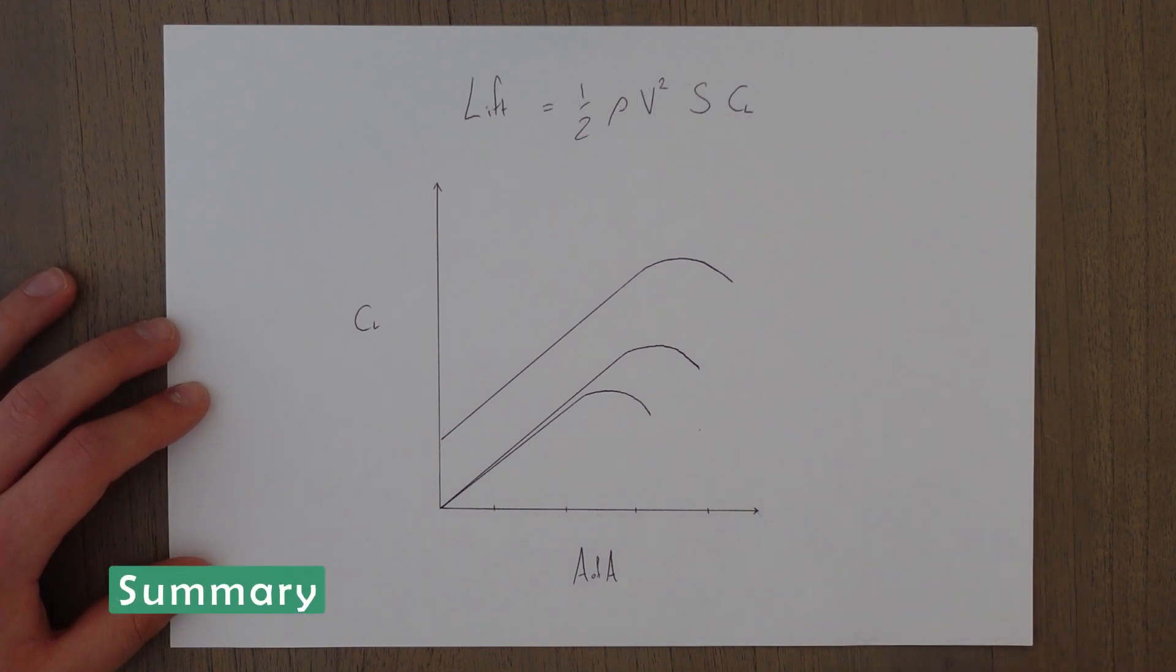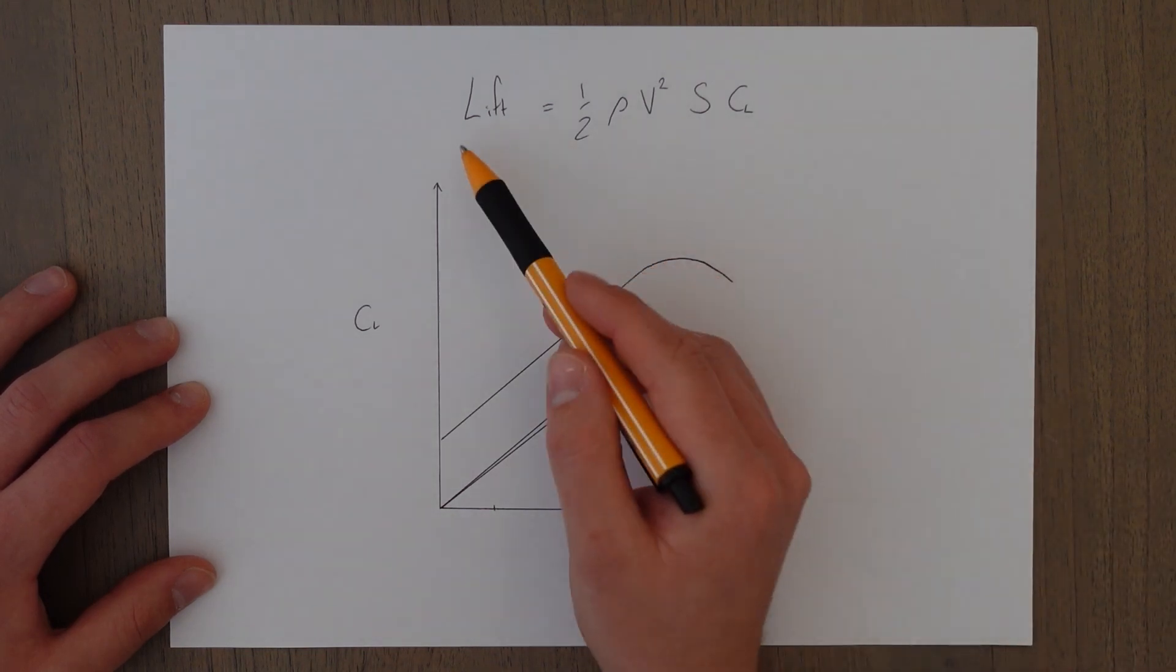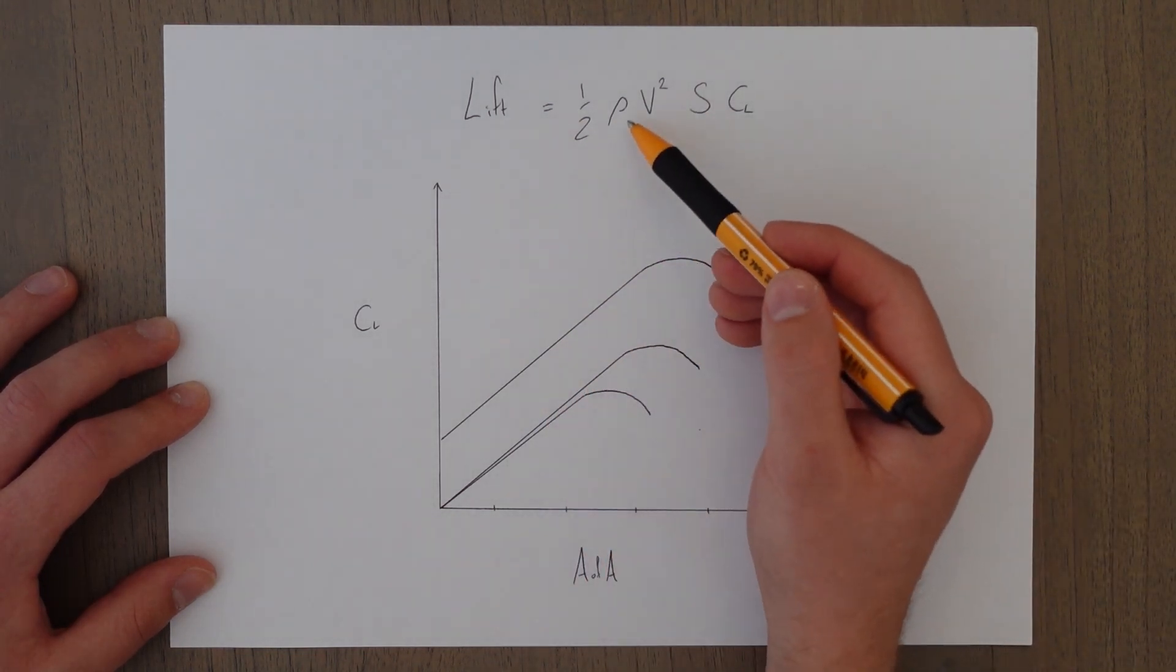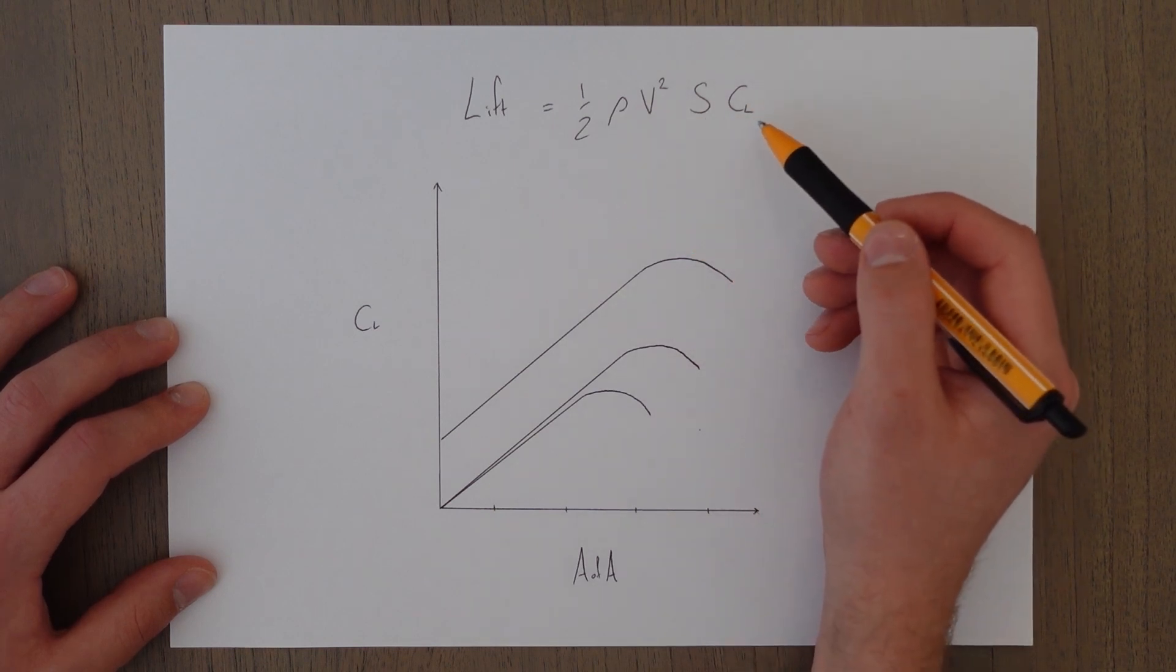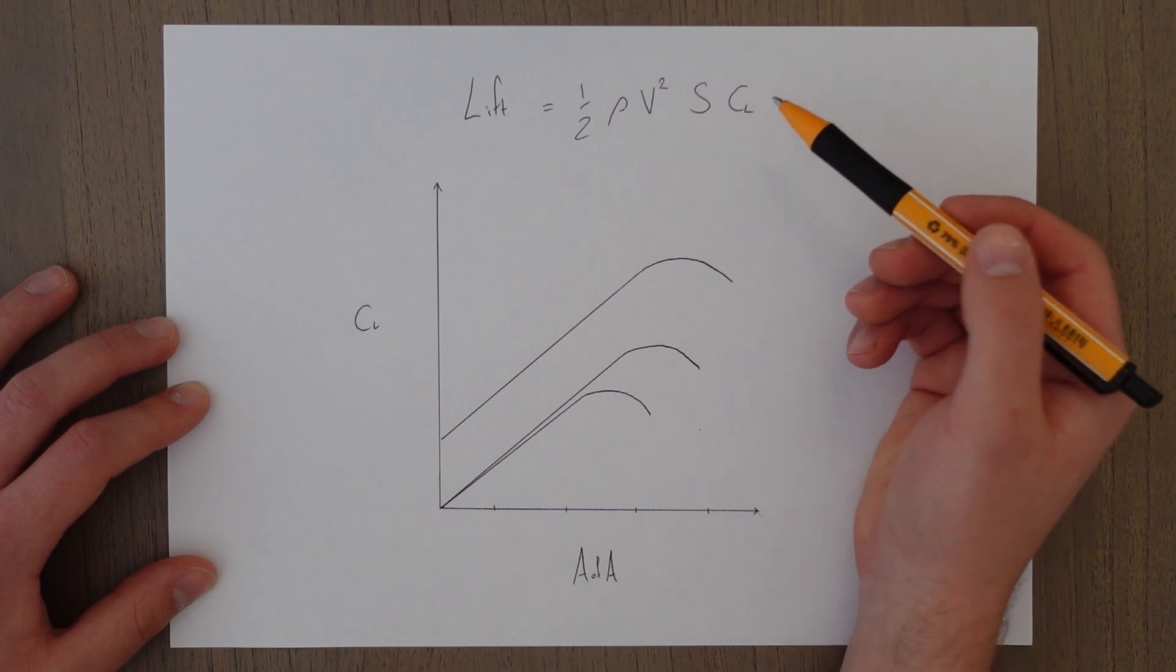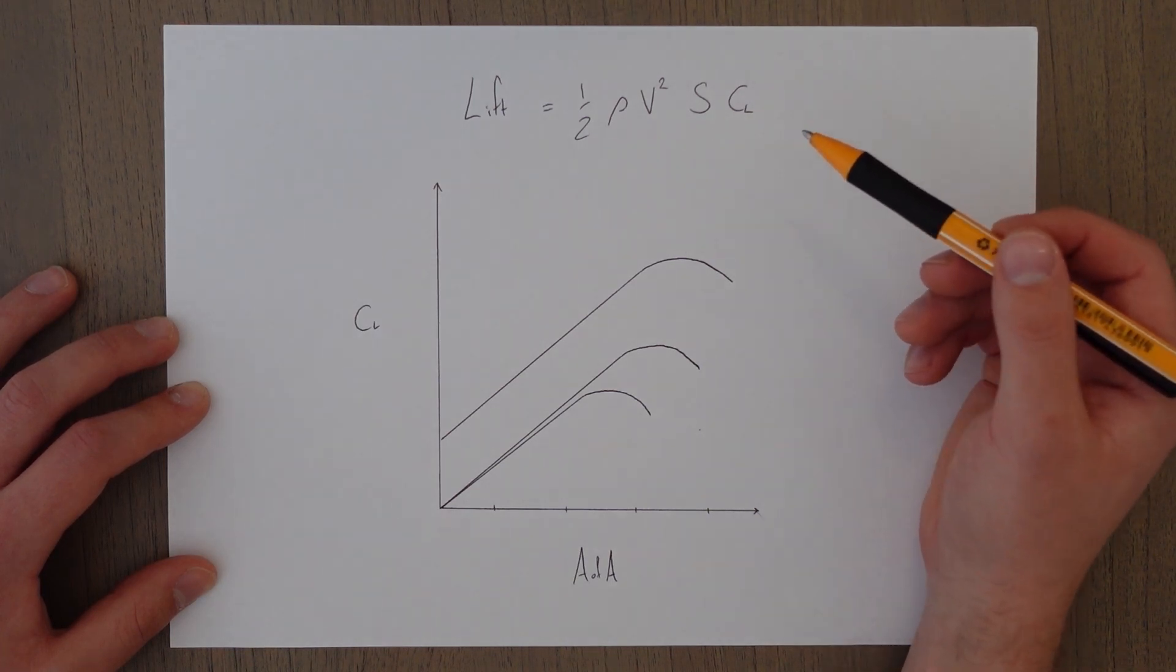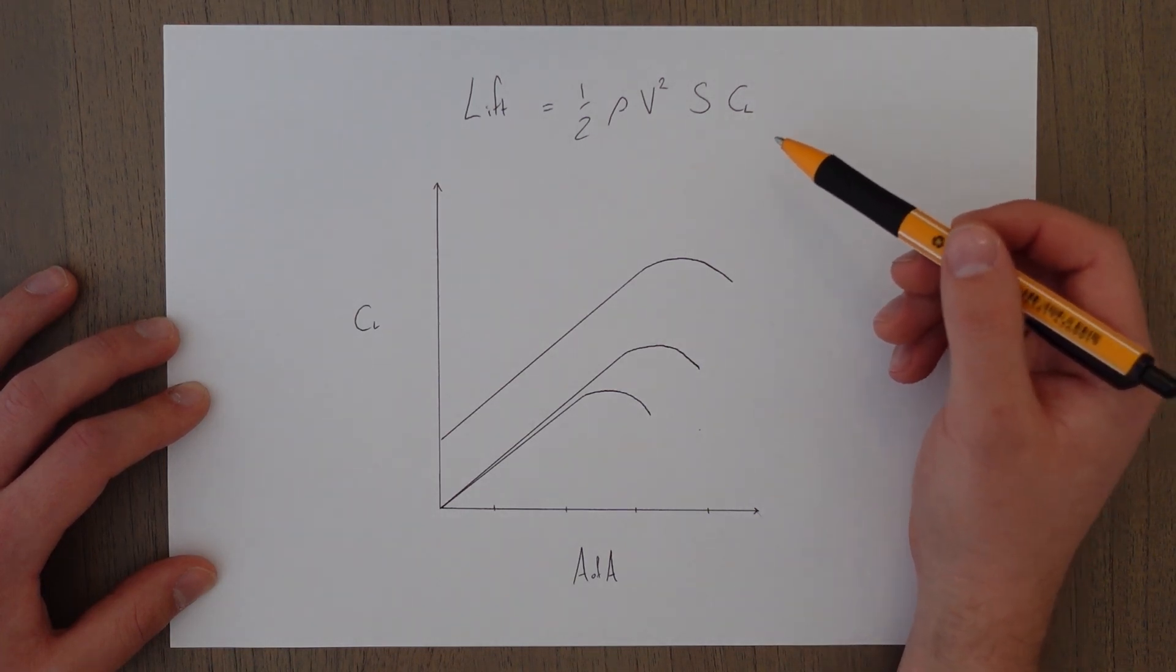To summarize, lift is the vertical component that directly opposes the weight of the aircraft. The equation is lift equals a half rho v squared S for surface area, CL for coefficient of lift, which is a measure of how the wing design itself is producing the lift.